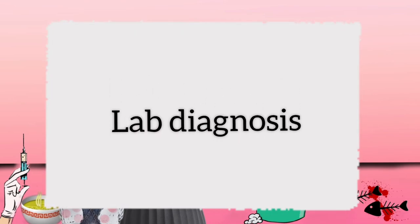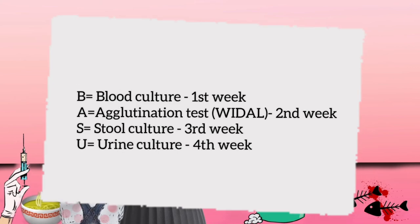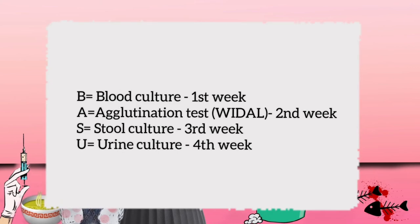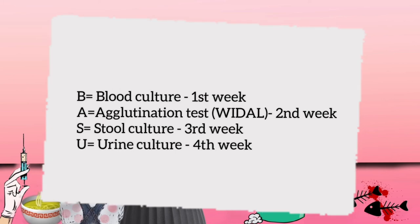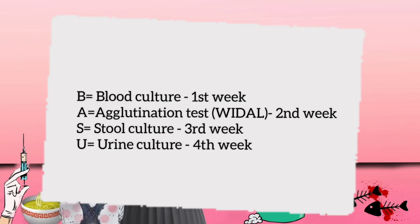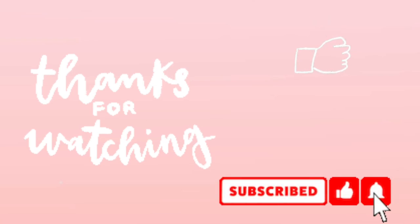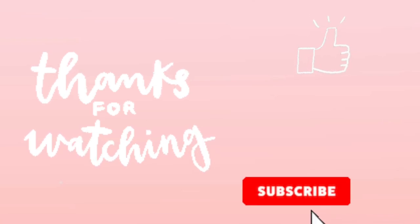For lab diagnosis, remember the mnemonic BASU: Blood culture comes positive in the first week; Agglutination test (Widal test) comes positive in the second week; Stool culture comes positive in the third week; and Urine culture comes positive in the fourth week.